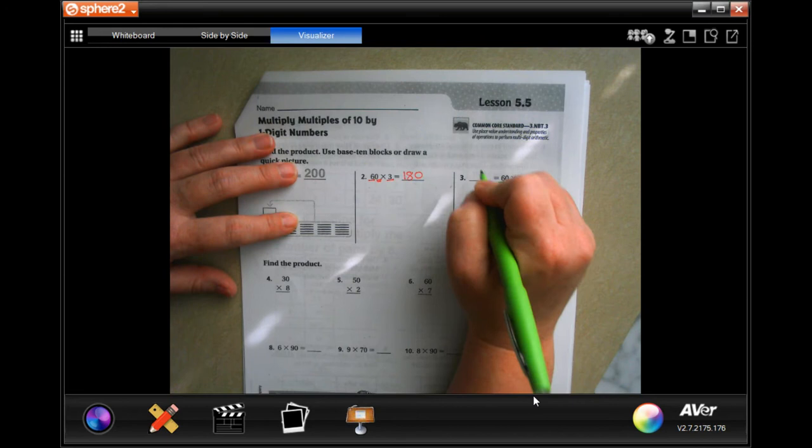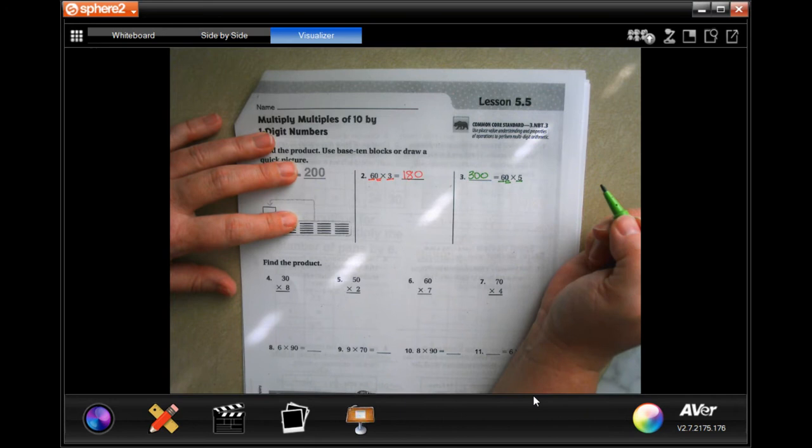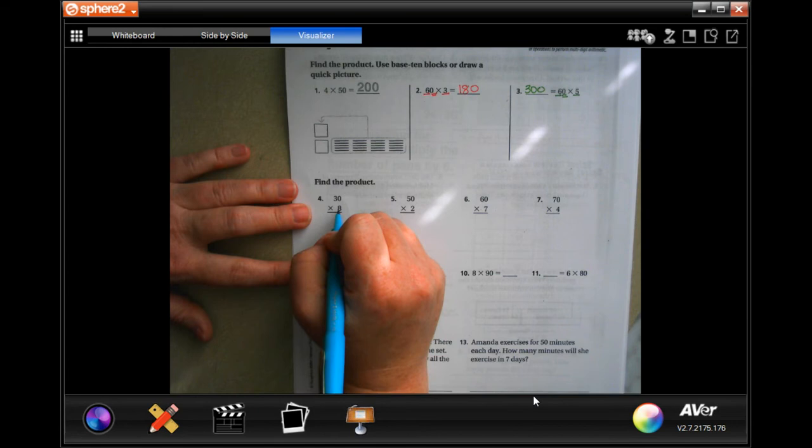Okay, five times six is 30. Do not let that fool you, you still have to attach that extra zero on. Okay, you do the same thing right here, there you go.